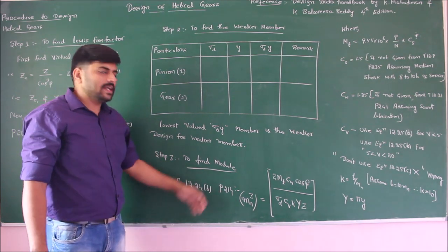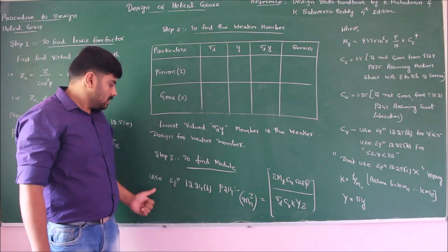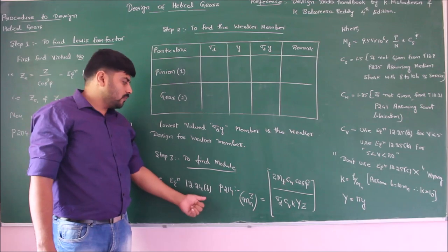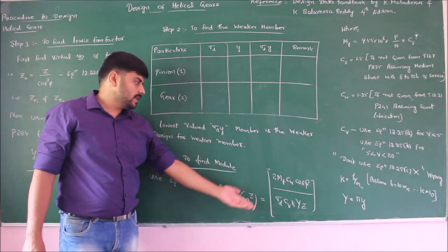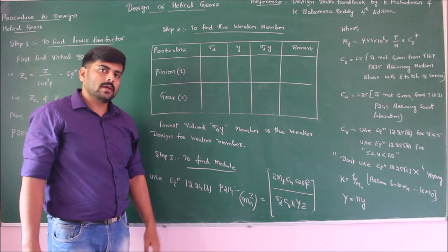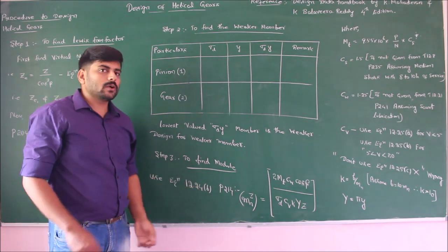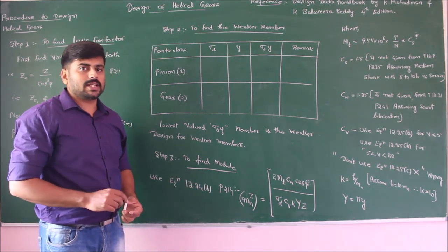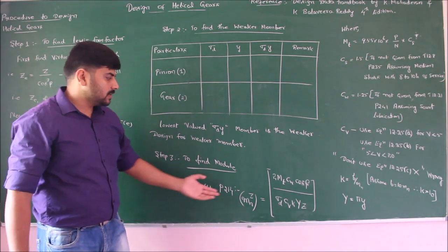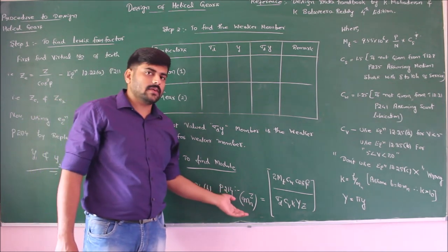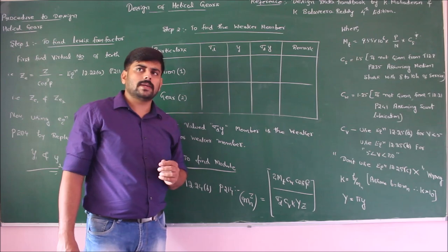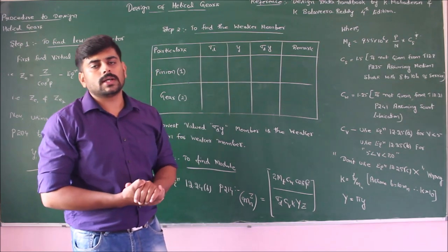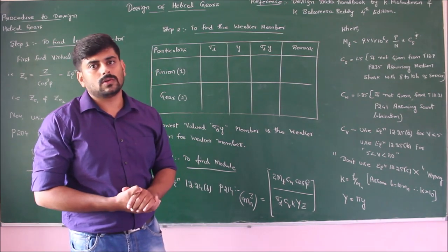Moving on to step 3 — to find the module. Use equation 12.24b, available in page number 214, to get the module equation. Format this module equation as per the first prerequisite — that is, whether to solve with respect to mn³·Cv or mn²·Y, depending on whether the pitch circle diameter is known to us or not.